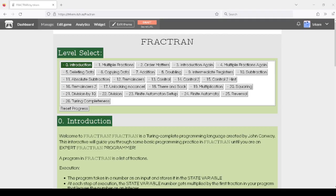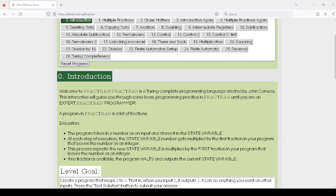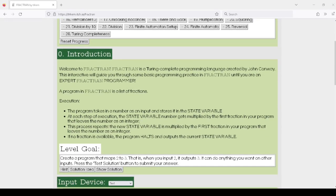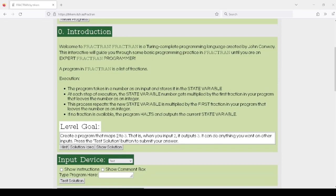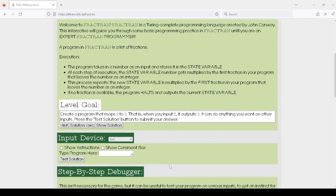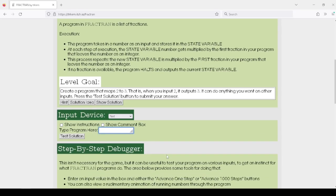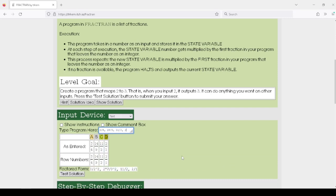This is what the Fractran interactive looks like. Each button is a separate programming puzzle, starting with a simple program asking you to create a program where input 2 outputs 3. Under input device, you can type in your program. Instead of typing a working program, let's enter the sample program from earlier. As you can see, it confirms the list of fractions you've entered.